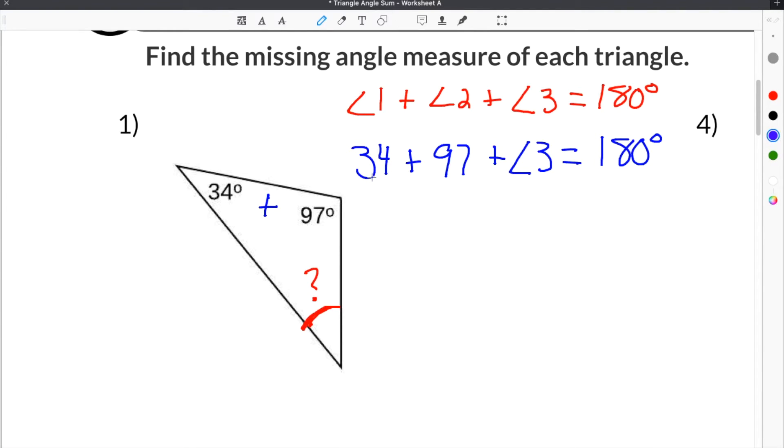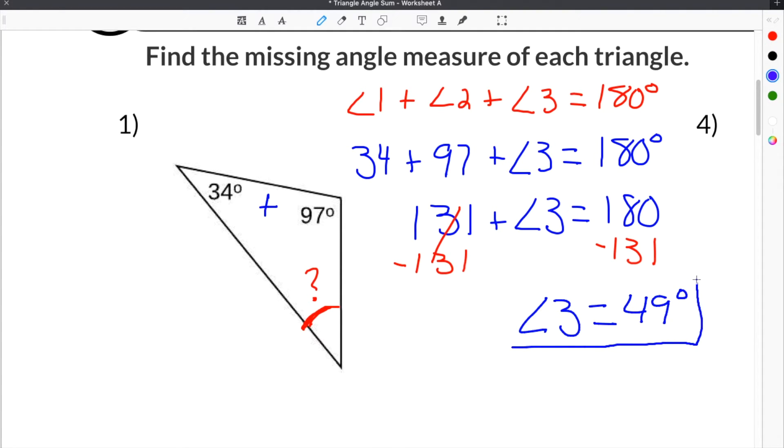Now we're going to add these two together. 34 plus 97 is 131, and then we don't know the measure of Angle 3, and it's 180 degrees. Then the last step is to subtract 180 minus 131 to get our answer of 49 degrees. So the measure of Angle 3 will be equal to 49 degrees.